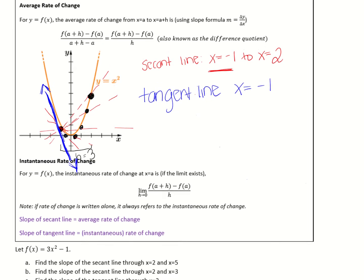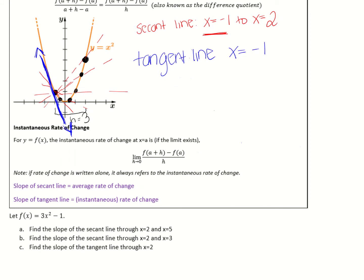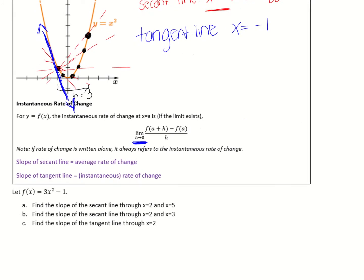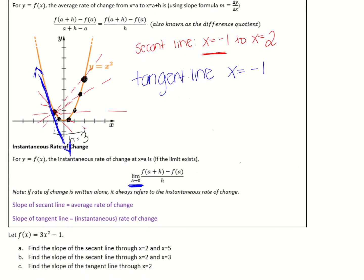The instantaneous rate of change at x = a — where you have only one x because it's at a specific point — is the limit as h approaches 0 of the difference quotient: the limit of f(a+h) minus f(a) divided by h. Note: if something says 'rate of change' without saying 'average,' it means instantaneous. The slope of the secant line is the average rate of change, while the slope of the tangent line is the instantaneous rate of change.